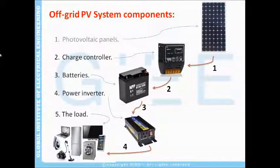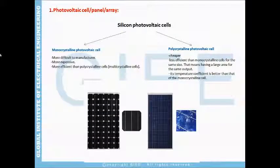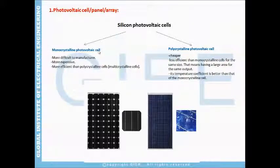We'll talk about the first component of an off-grid PV system: photovoltaic panels. We have two main common kinds used in industry and many applications. The first one is the monocrystalline photovoltaic cell, and the second one is the polycrystalline or multicrystalline photovoltaic cell.